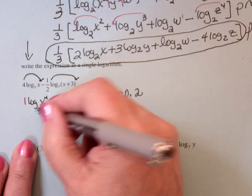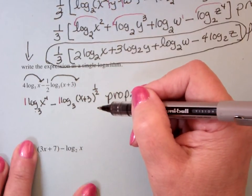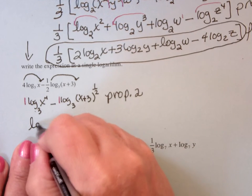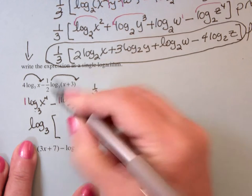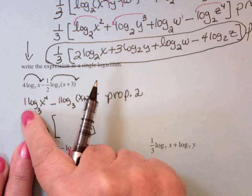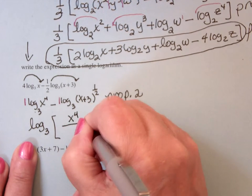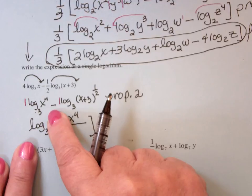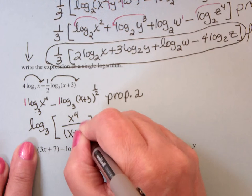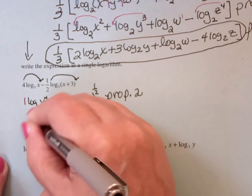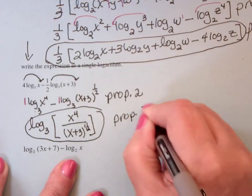If I have a subtraction, subtraction turns into a fraction or division of the two arguments. So it becomes log base 3 of the numerator, because the coefficient of this log is plus. So the numerator is x to the 4th. And because the coefficient of this is minus, it's going to be x plus 3 to the 1/2 power. And that's property 3.